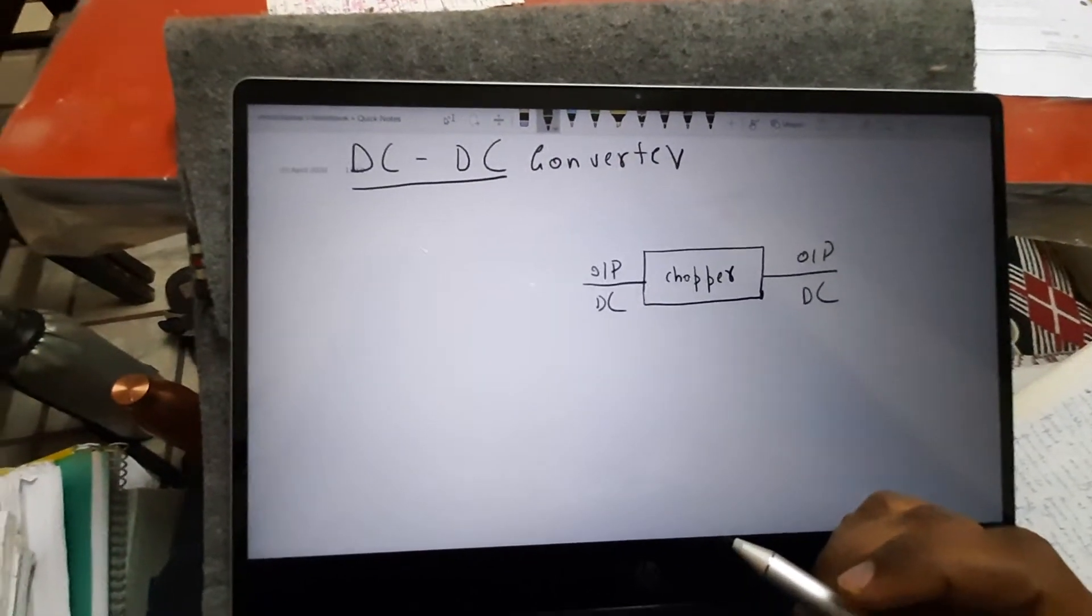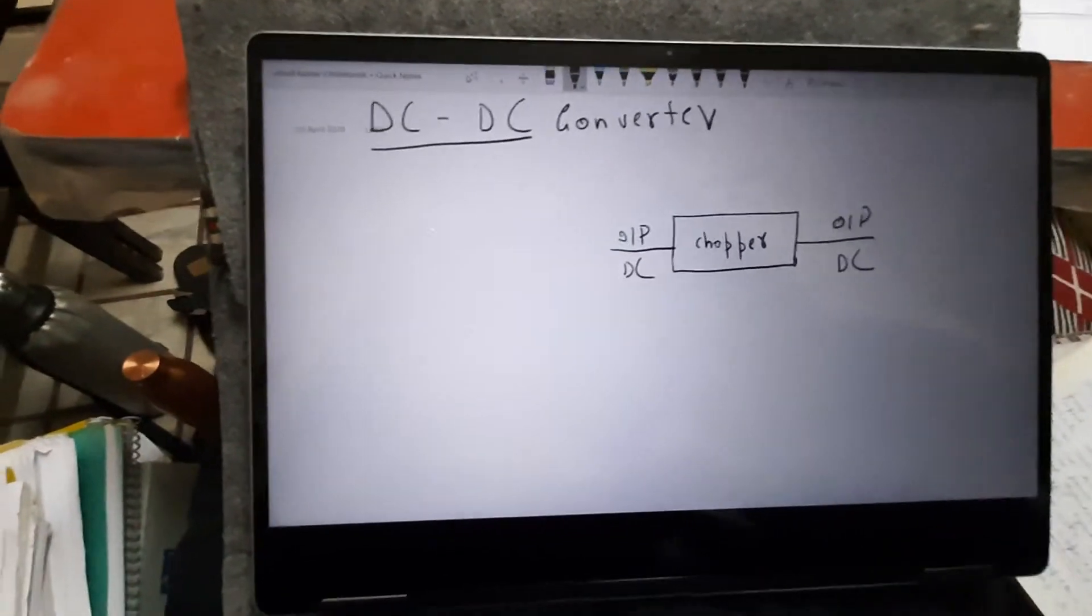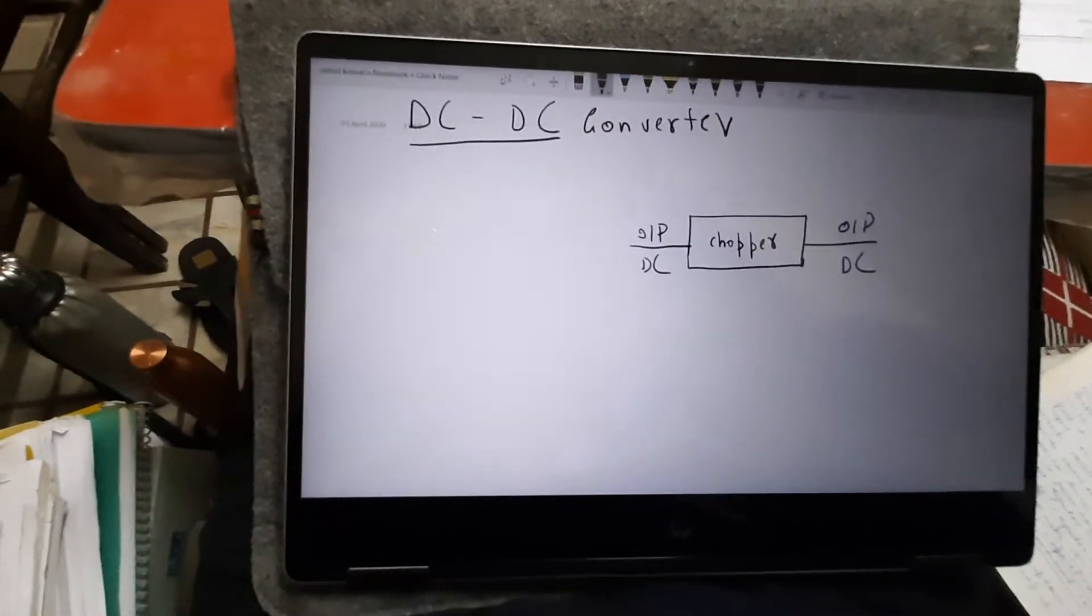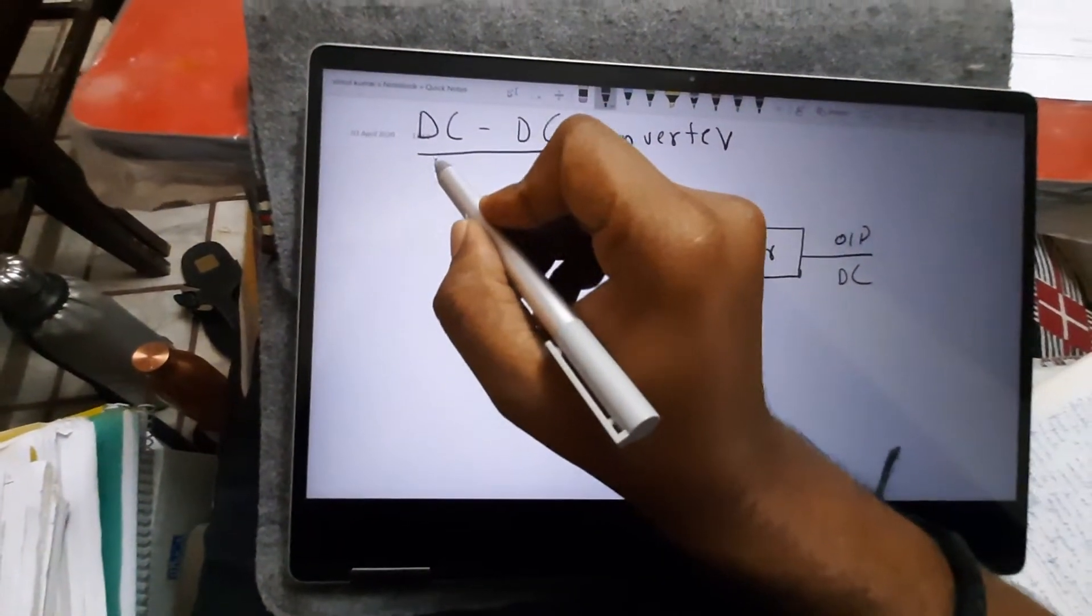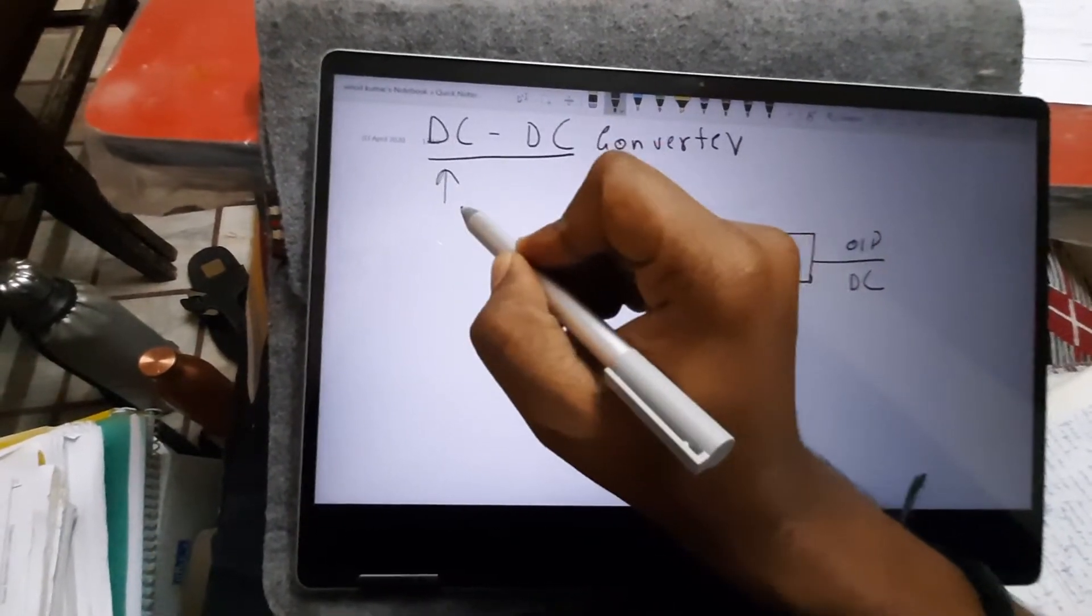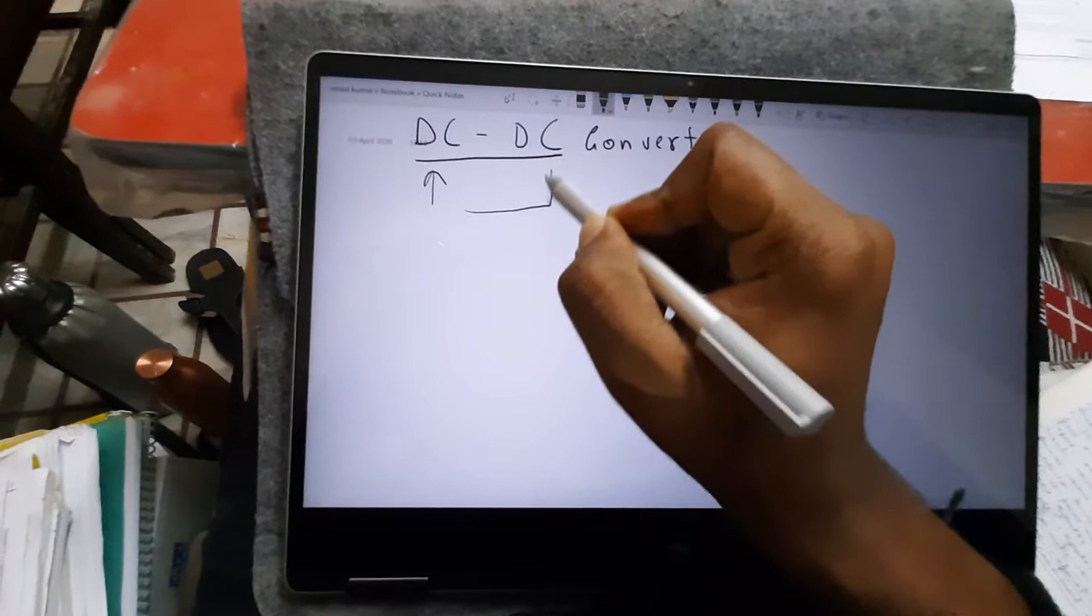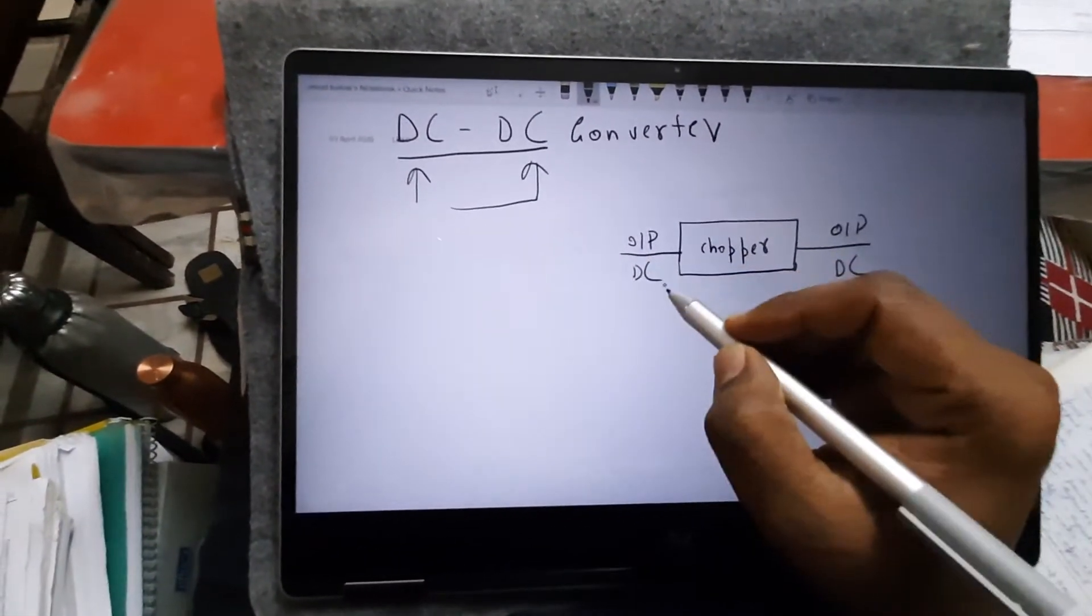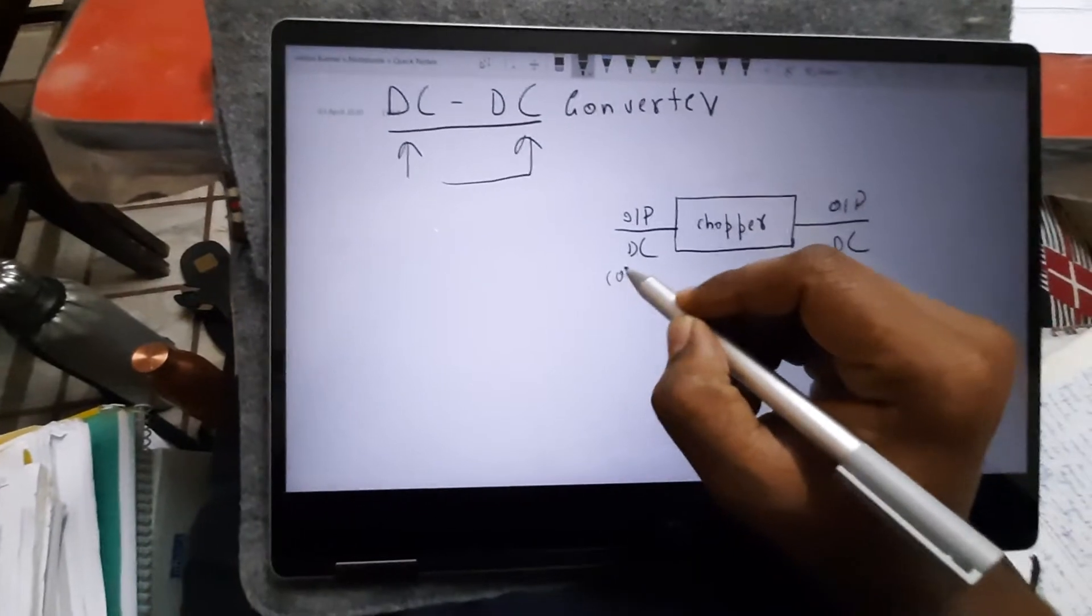We'll start with Unit 3, that is chopper or DC-DC converter. So what does DC to DC converter or chopper mean? Like the name suggests, it is converting one side DC voltage to the other side DC voltage, but the input side DC voltage is constant.